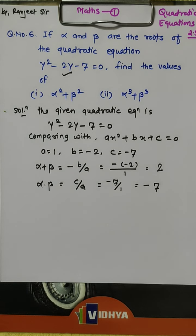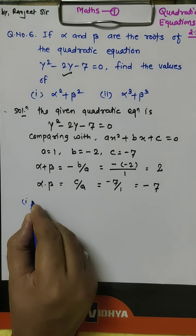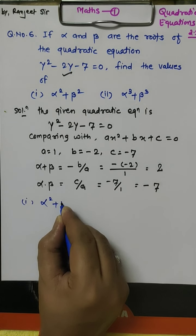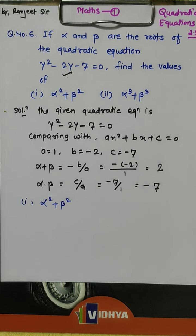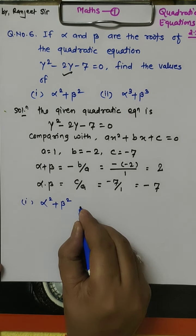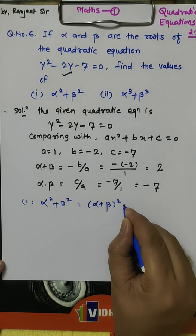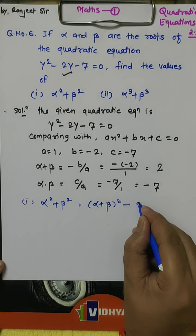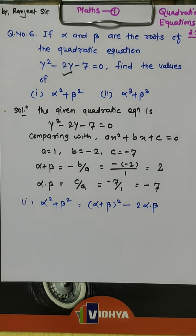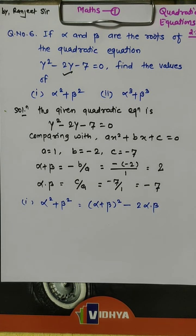Now we will find the value of the first part, that is alpha squared plus beta squared. Alpha squared plus beta squared is equal to alpha plus beta the whole square, minus 2 times alpha into beta. This is the formula.